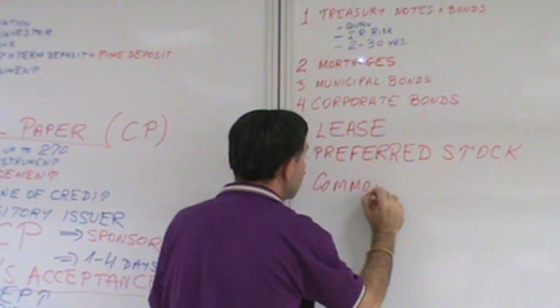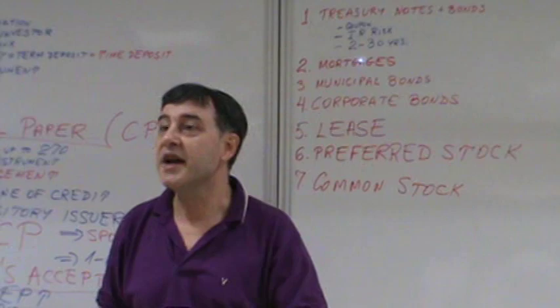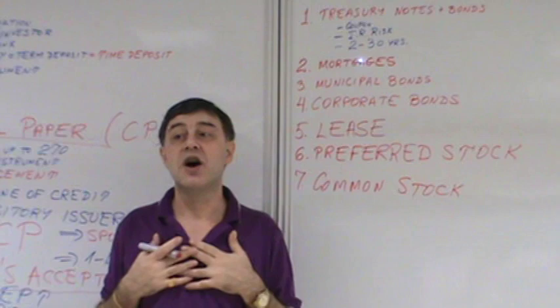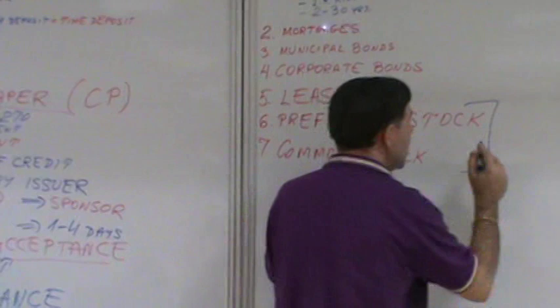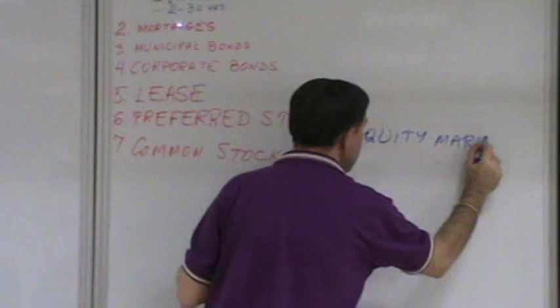And now we get to number seven. Common stock. Common stock will be share of ownership. We already studied that. Now, we can simply say that to the extent that we can classify these. This represents equity market and equity instruments. And these are mostly debt instruments.